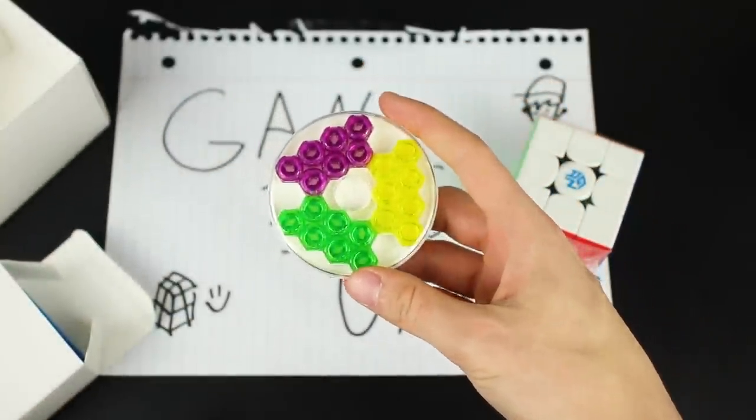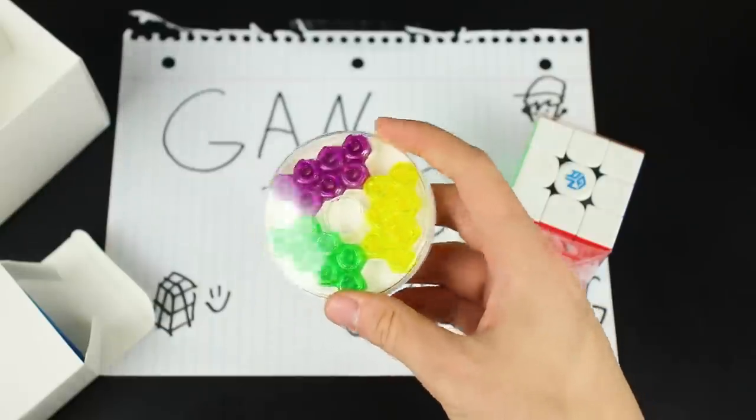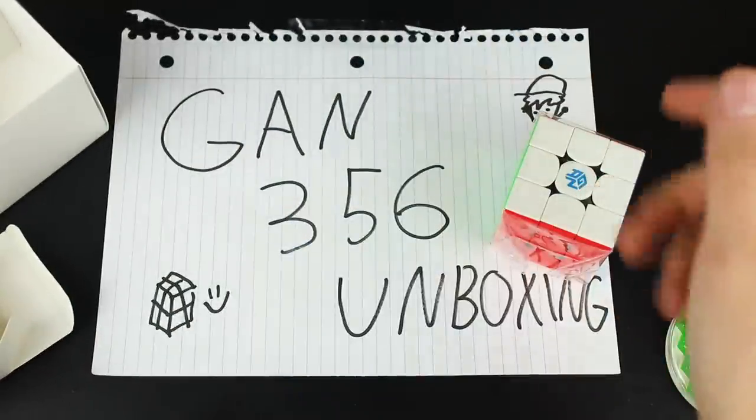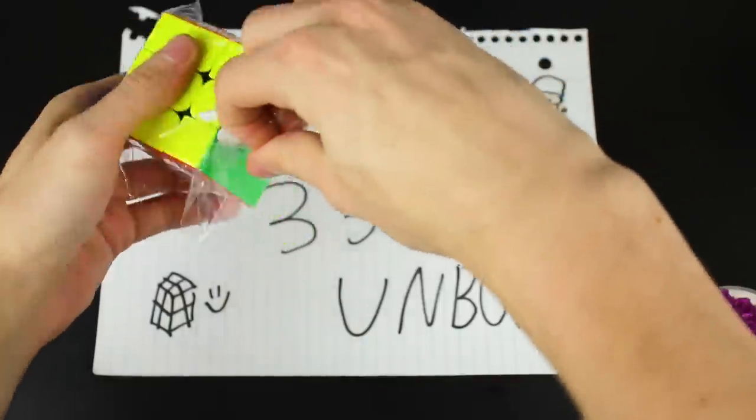We've got the magnets, purple, green, and yellow. That's good. We've got the massive GAN pamphlet and a GAN cube bag. Dope. And we bring this out of its packaging.